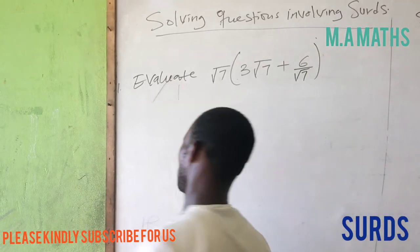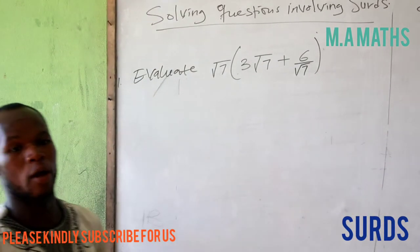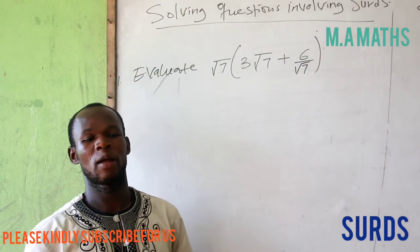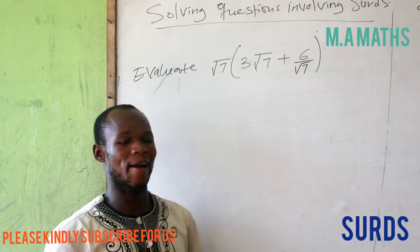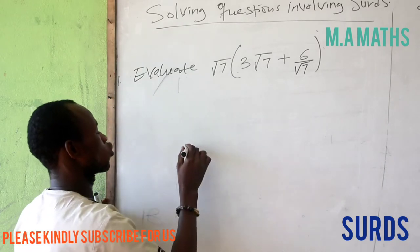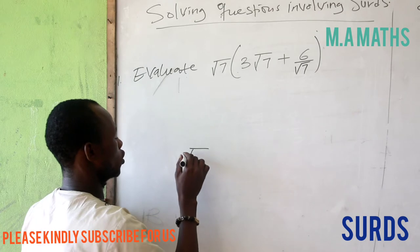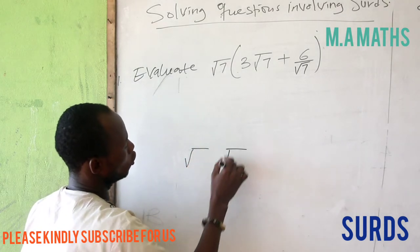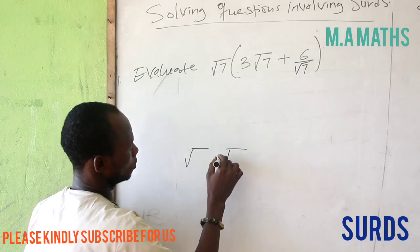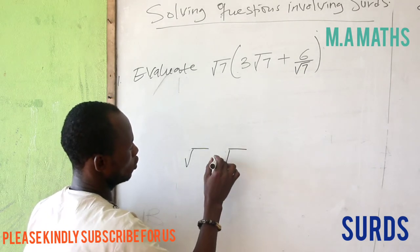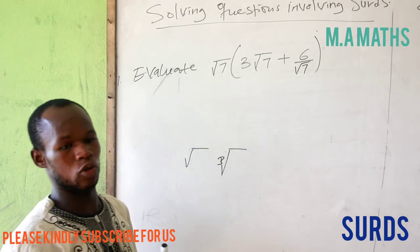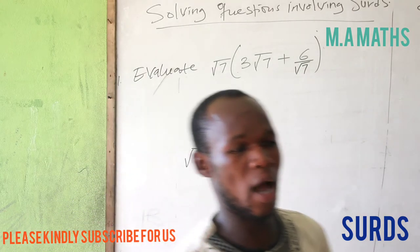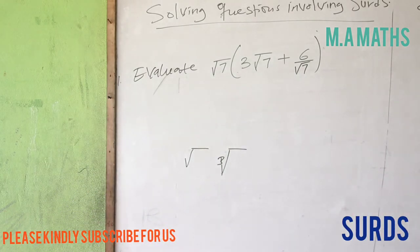When we talk about surds in mathematics, we are talking about any expression involving a radical sign - either square root, cubic root, or any other root. They are all surds.